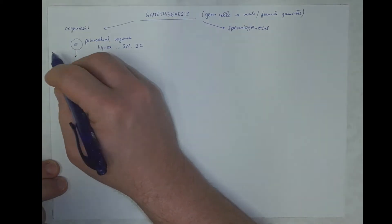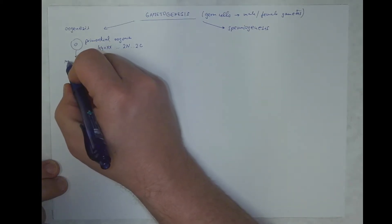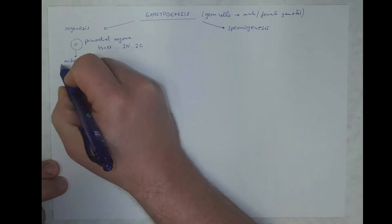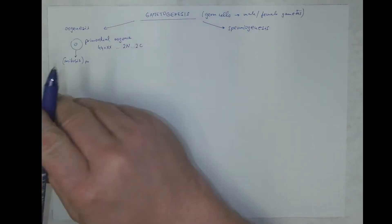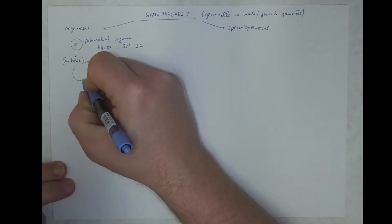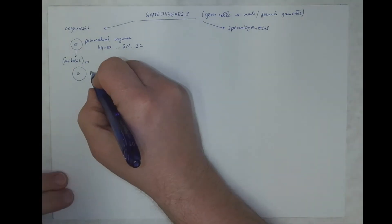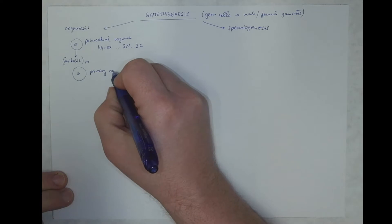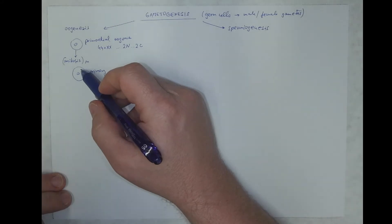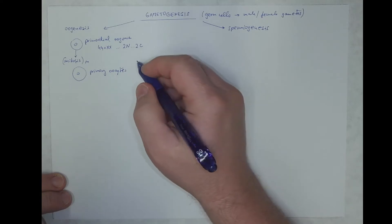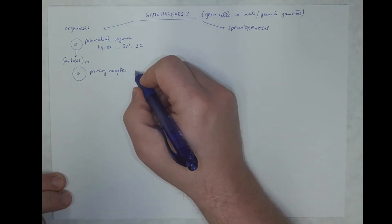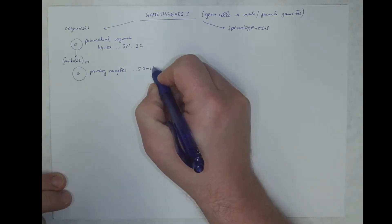They multiply by mitosis that repeats many times to produce cells called primary oocytes. This occurs in the cortex of ovary of a female fetus, approximately in the fifth month of prenatal development, where the number of primary oocytes reaches five to six million.